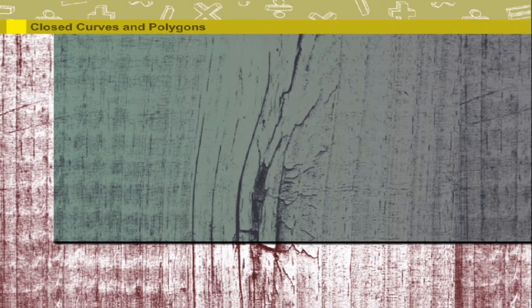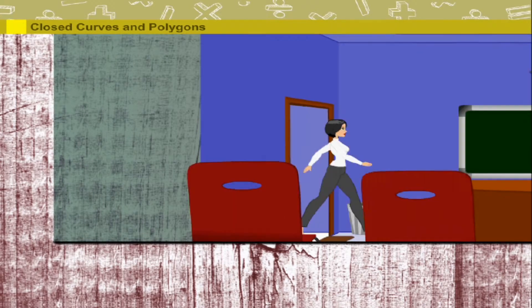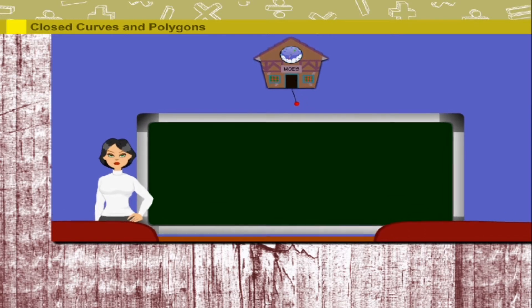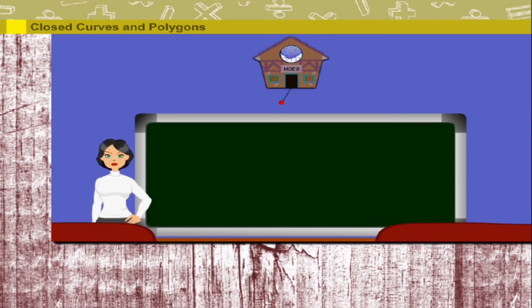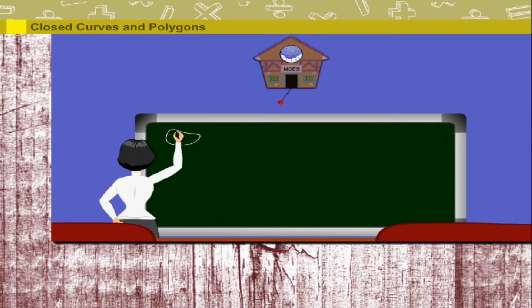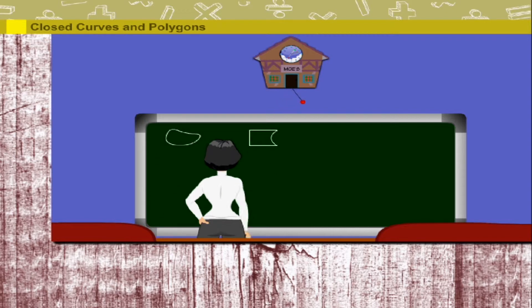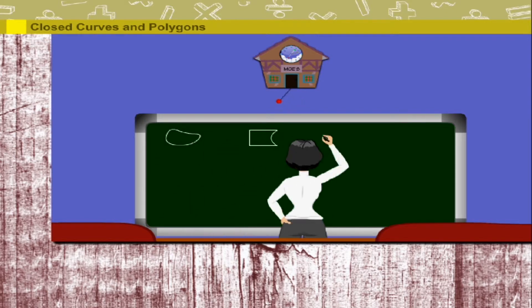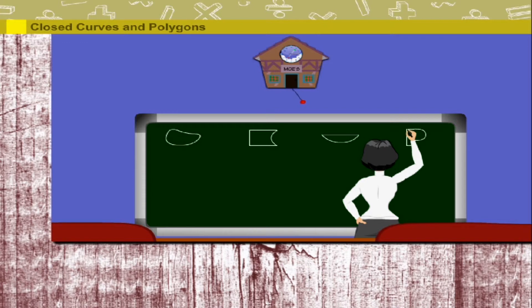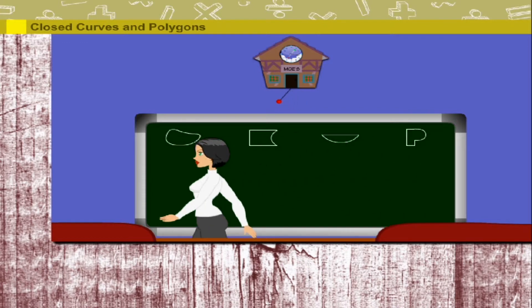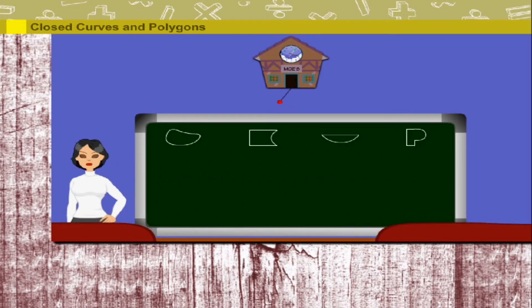Closed Curves and Polygons. Teacher Lucy is on the board to show some shapes she is drawing. All the shapes 1, 2, 3, and 4 at the top have a curved side and are called closed curves.